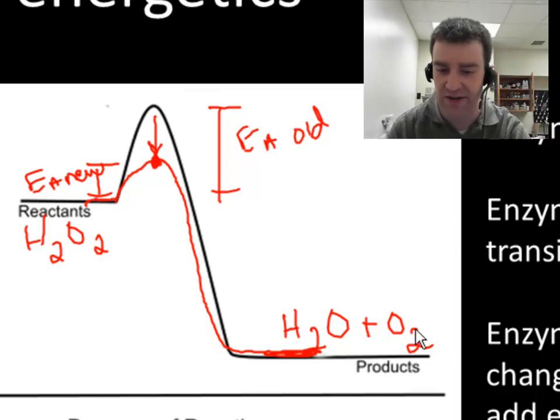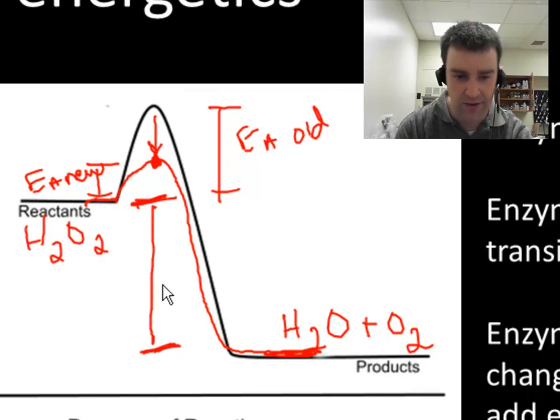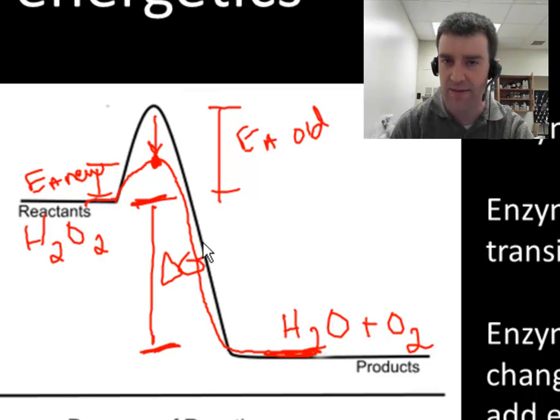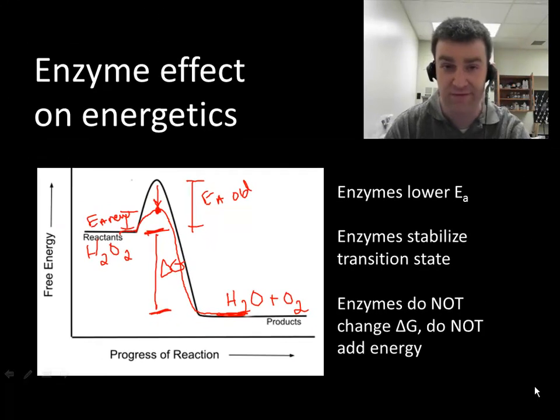Please notice my note down here. Enzymes are not changing delta G. If the transition state is lowered, that still does not affect the difference between the overall reactants and the overall products. In other words, enzymes cannot make an endergonic process faster. The reaction has to be exergonic first. Enzymes cannot affect delta G. That's what ATP does.